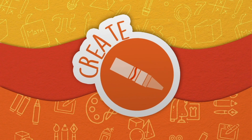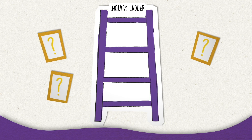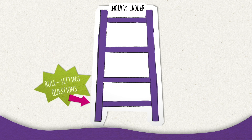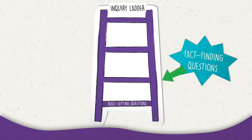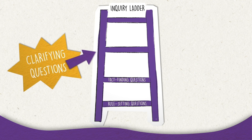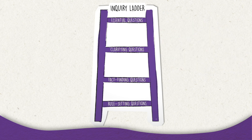Create. First, create an inquiry ladder, which is a design that helps organize questions into different types. The lowest ladder rung is where you will put the rule-setting questions. The next section, moving up, is for fact-finding questions. Then move up to clarifying questions. And finally, put your essential questions on the top — these are the highest level of inquiry.